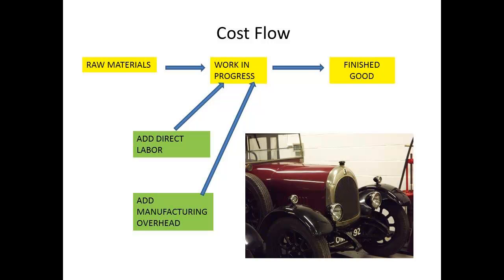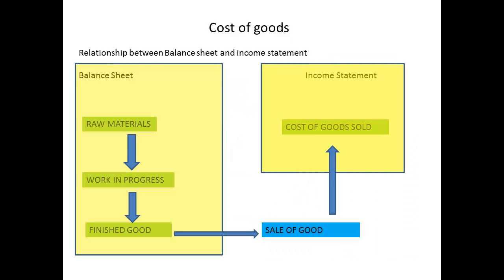Let us look briefly at how these costs flow through the accounts. Raw materials costs are transferred to work in progress, together with direct labour costs and manufacturing overhead costs, as they are incurred. All these costs are transferred to the inventory for finished goods as work is completed on the product. The balance sheet will then have three inventory accounts, with the costs flowing through these accounts. Only when the goods are actually sold will these involve an entry to the income statement — at this point, there will be revenue from the sale, and the cost will be transferred to the cost of goods sold.